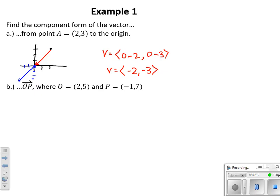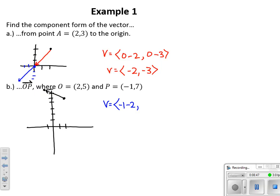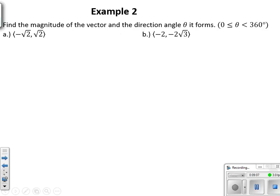A vector is symbolized not as a ray but more of a harpoon — one little slant on the arrow. Here we've got a vector going from point O at (2, 5) to point P at (-1, 7). Head minus tail: -1 minus 2 gives a horizontal component of -3, and 7 minus 5 gives a vertical component of 2. That's exactly what we're seeing in the vector: 3 horizontal units to the left and 2 units up.